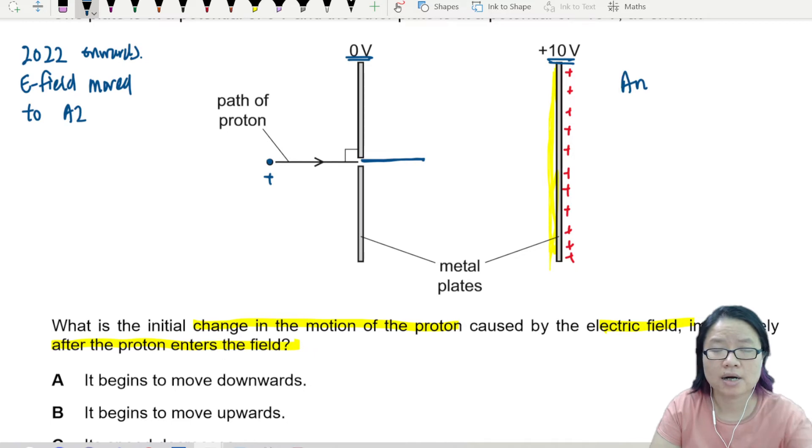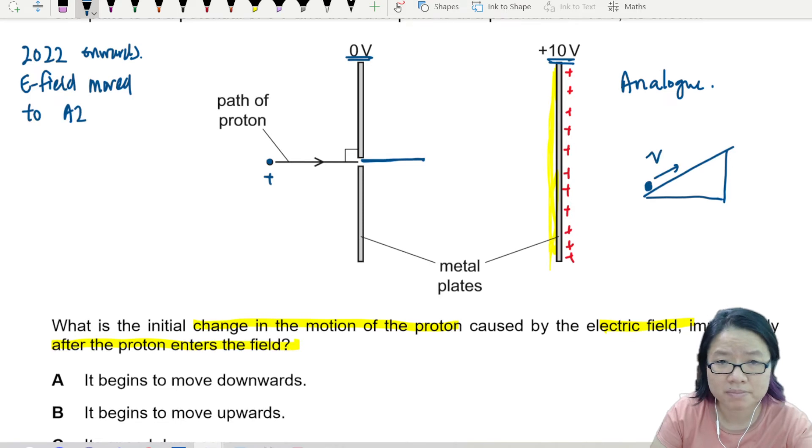So in an analogous situation, you have an inclined plane. And you have a ball, which is like a proton that is moving up. Would it be able to reach to the top? Depends on the speed, but maybe not.